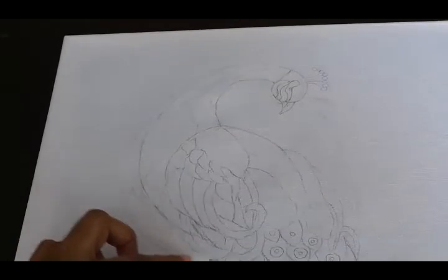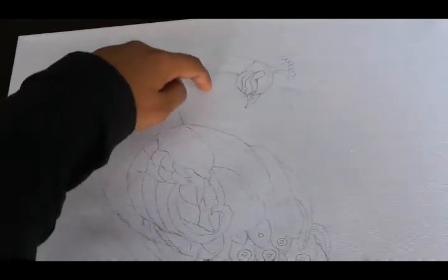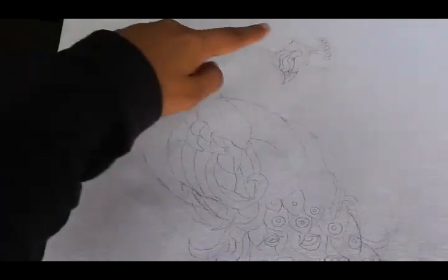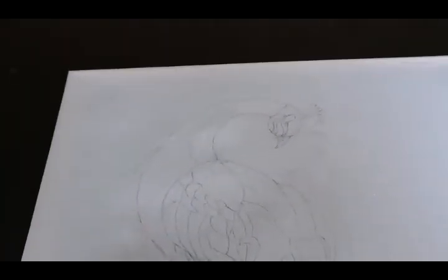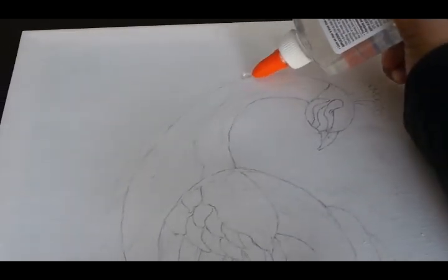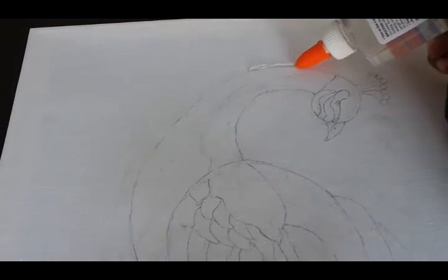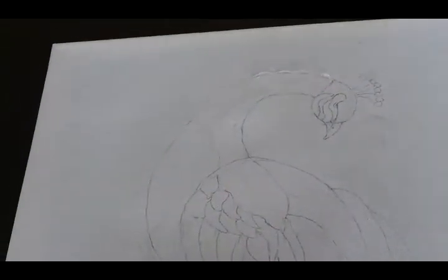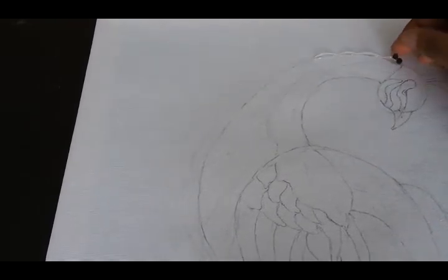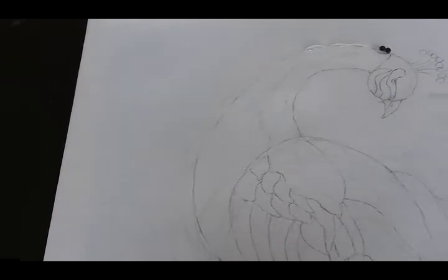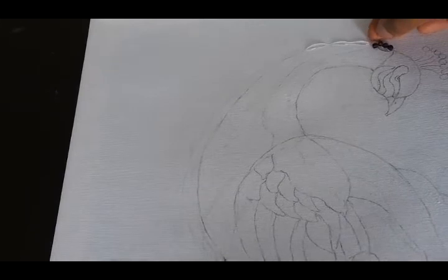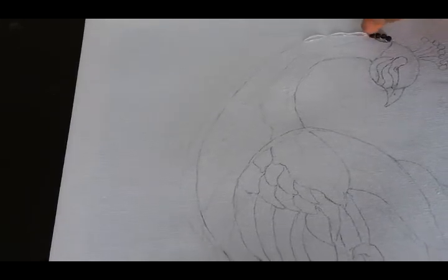I just want to put my black color beads around that line. Let me show you. First, start by applying your glue on the line, enough to hold the pearls. Then place your black color beads on top of that glue, creating that line. That gives you an outline for your picture.